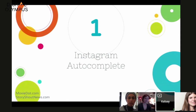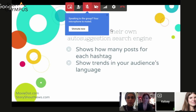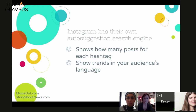The first thing I wanted to talk about was Instagram autocomplete. When I figured this out and asked colleagues in the space if they'd heard about it, they had no idea and thought it was really cool. Instagram basically has its own auto-suggestion search engine — as you're typing hashtags, it shows you how many posts exist for each hashtag. This is so useful for search specifically because it shows you trends in your audience's language and how they actually talk.